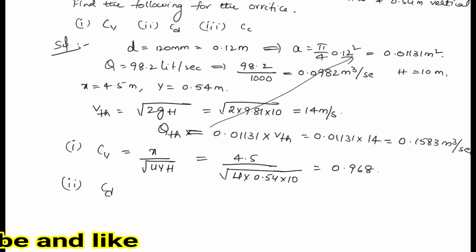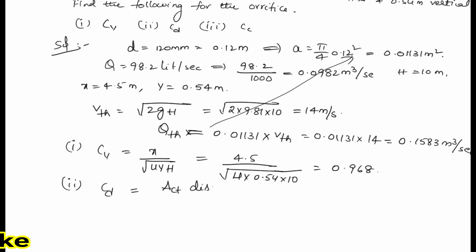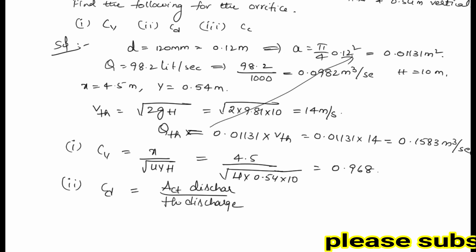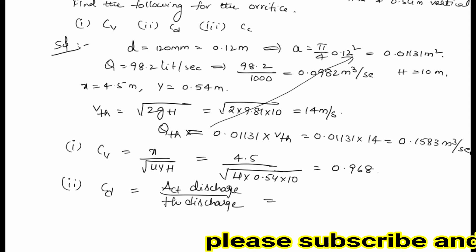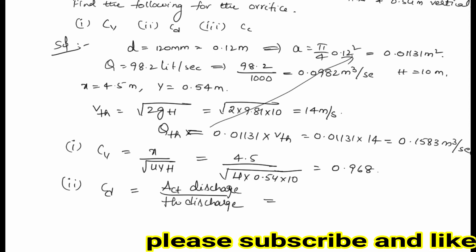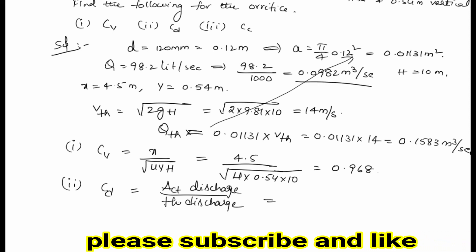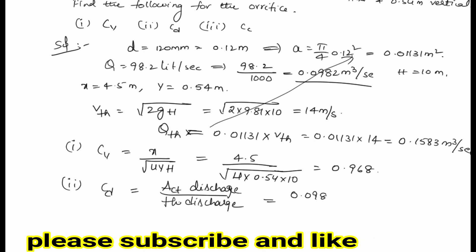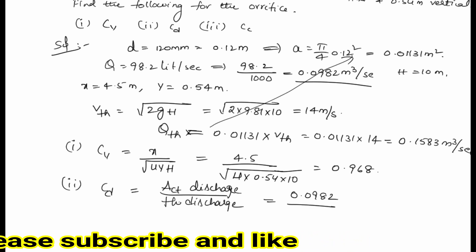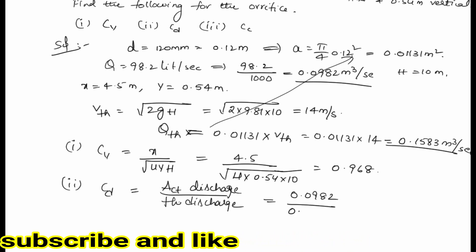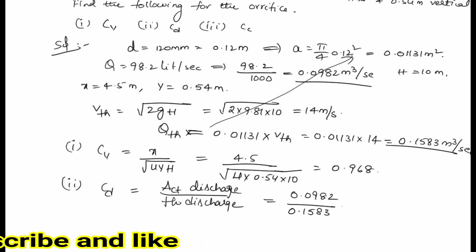Next we find Cd. Cd is the actual discharge divided by theoretical discharge. The actual discharge was given in the problem as 0.0982, and the theoretical discharge we calculated as 0.1583. Dividing these values gives us Cd equal to 0.62.